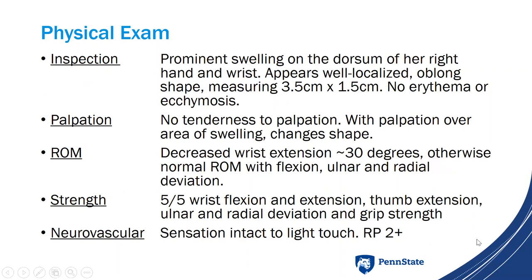On physical exam, she had prominent swelling on the dorsum of her right hand and wrist — well-localized, oblong in shape, measuring about 3.5 by 1.5 centimeters, with no bruising or redness. She was not tender with palpation, but the swelling changed shape with palpation. She had decreased wrist extension to approximately 30 degrees, otherwise normal range of motion. Strength was overall well preserved and she was neurovascularly intact.